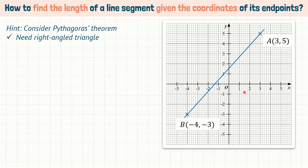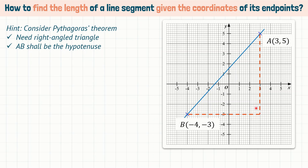We shall let AB be the hypotenuse. A hypotenuse is the side of a triangle that is opposite the right-angle. In order to create a right-angle triangle, we draw a vertical line down from point A and then a horizontal line to the right from point B. This creates a right-angle triangle such that the corner where they meet is the right-angle, and AB is the hypotenuse.